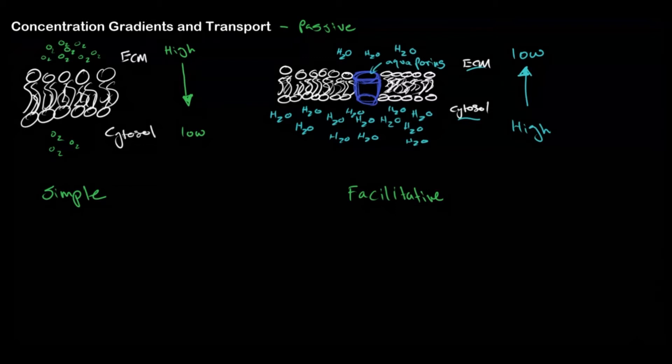In facilitated diffusion there's going to be a protein involved to help aid the transport of certain molecules. These molecules need assistance because of their polarity — it could be hard for them to go through the phospholipid bilayer because they're a polar molecule, or because of their size. For example, glucose could be slightly larger or slightly polar, so we need the aid of a protein. Both simple and facilitated diffusion are passive and do not require ATP; they go down their concentration gradient.